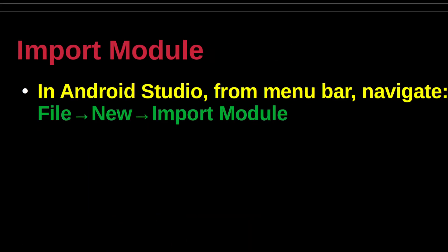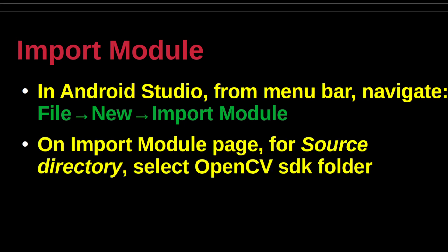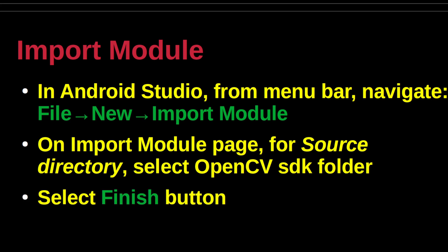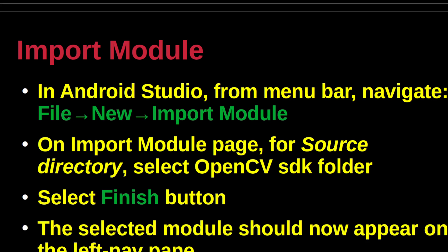From the main menu bar in Android Studio, drill down as follows: File > New > Import Module. On the Import Module page, for the text value for source directory, select the OpenCV SDK folder that was extracted from the zip archive earlier. Then select the Finish button. The selected module should now appear on the left nav pane.